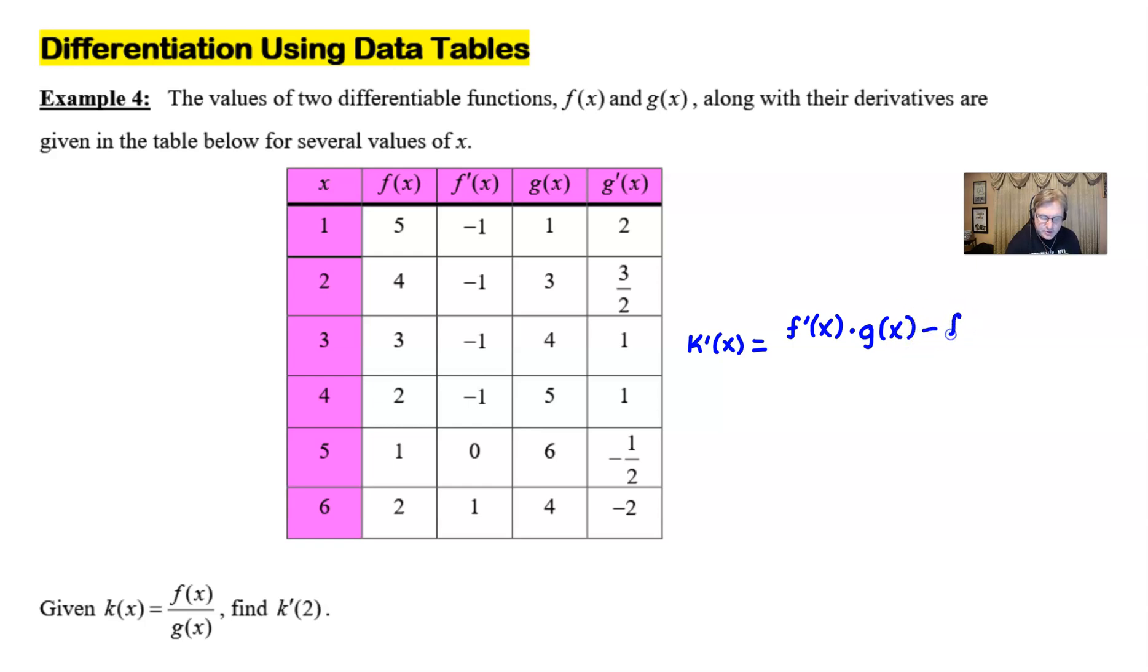subtract the numerator, f(x), and multiply by the derivative of the denominator. In this case, that's g'(x). And all of that would be placed on top of the denominator, which in this case would be g(x) and then squared.